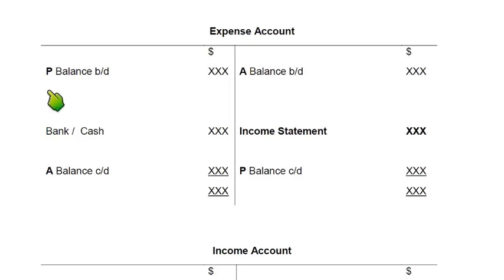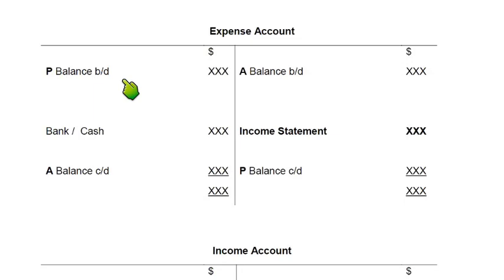Why are we using this mnemonic? Just to make sure where P comes. This P is prepaid. We have already discussed that if we have paid some money in advance — three months rent in advance — this rent is our asset because we have paid it but have not used the space yet. The nature of the asset is debit, so balance BD comes on the debit side. If balance BD, the opening balance, is on the debit side, then balance CD will be coming on the credit side.